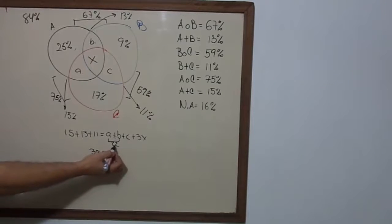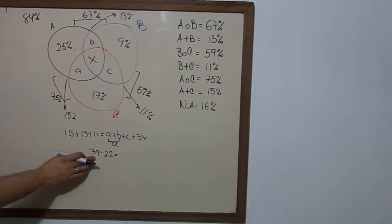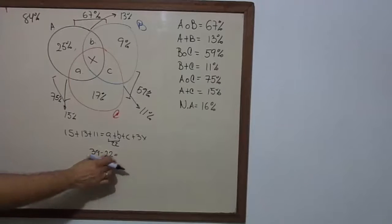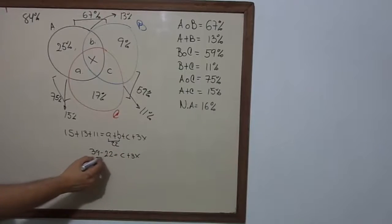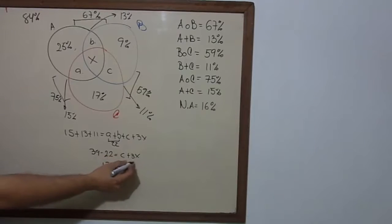And this is 22. So you take 22 to the other side of the equation with the opposite sign. And we get 39 minus 22. And finally, we get C plus 3X. And this is 17. And this equals C plus 3X.